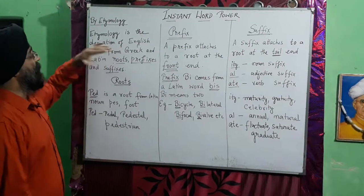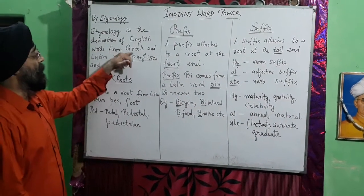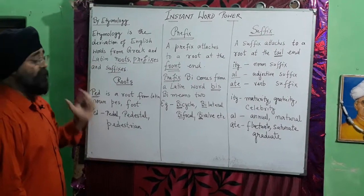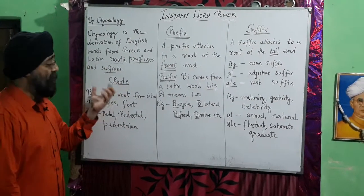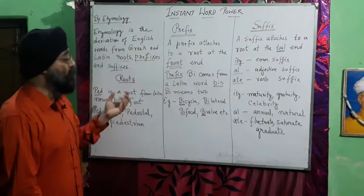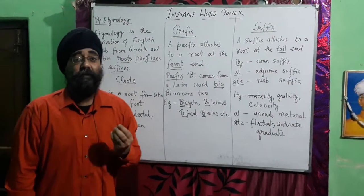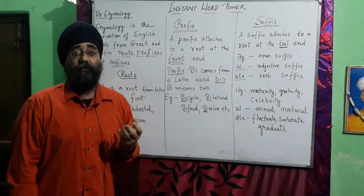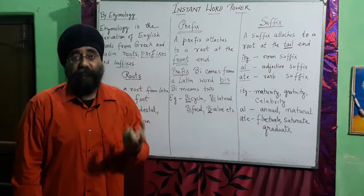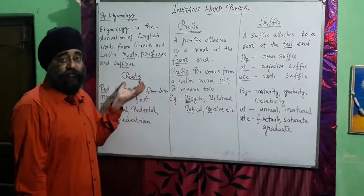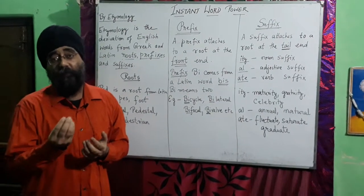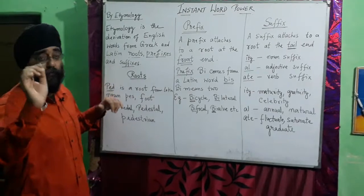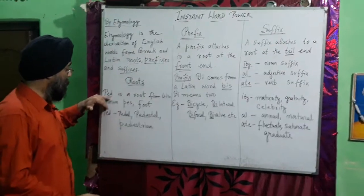Etymology teaches us that we can learn words with the help of Greek and Latin roots, prefixes, and suffixes. Now, what is a root? You may be confused — we have learned about roots in plants, through the biological system. Similarly, roots are the base for words, from where words come out like a flower or a bud.